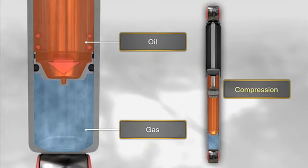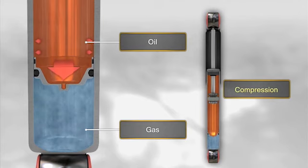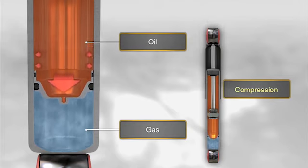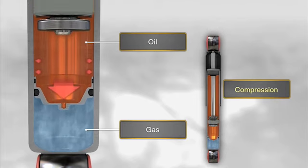When the shock absorber is compressed, the rod enters the working chamber and the oil compresses the gas, causing the floating piston to move, reducing the volume of the chamber.